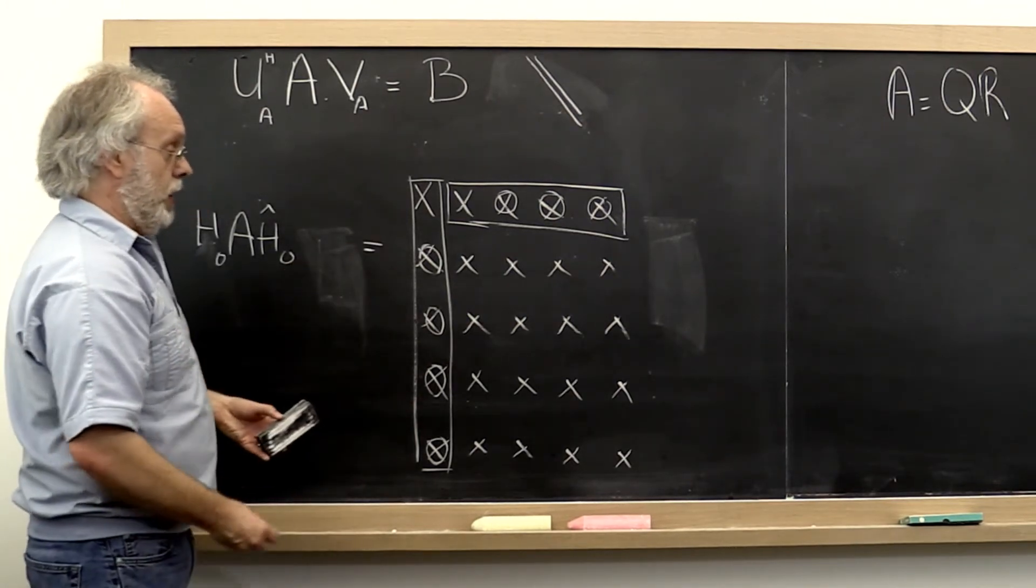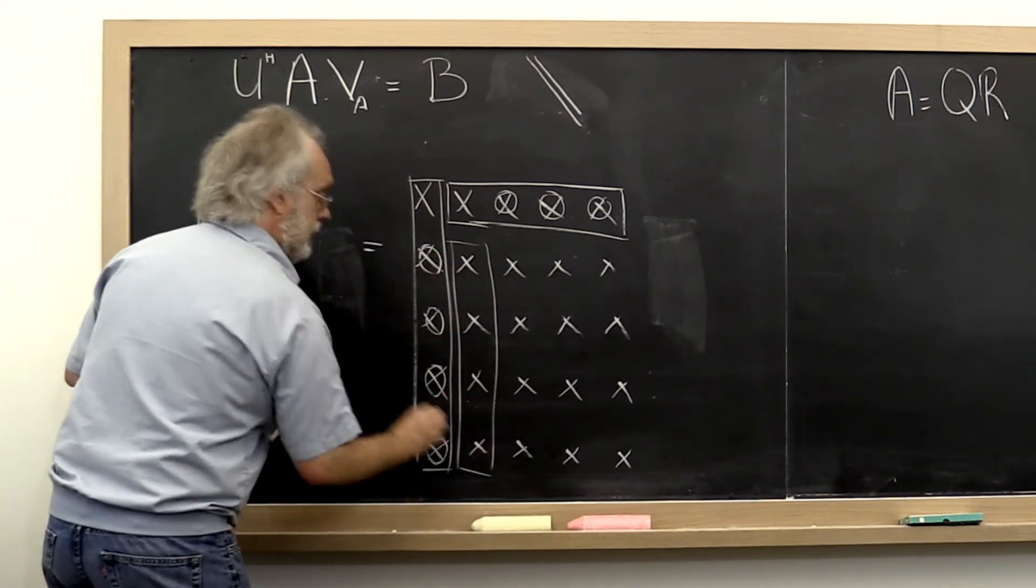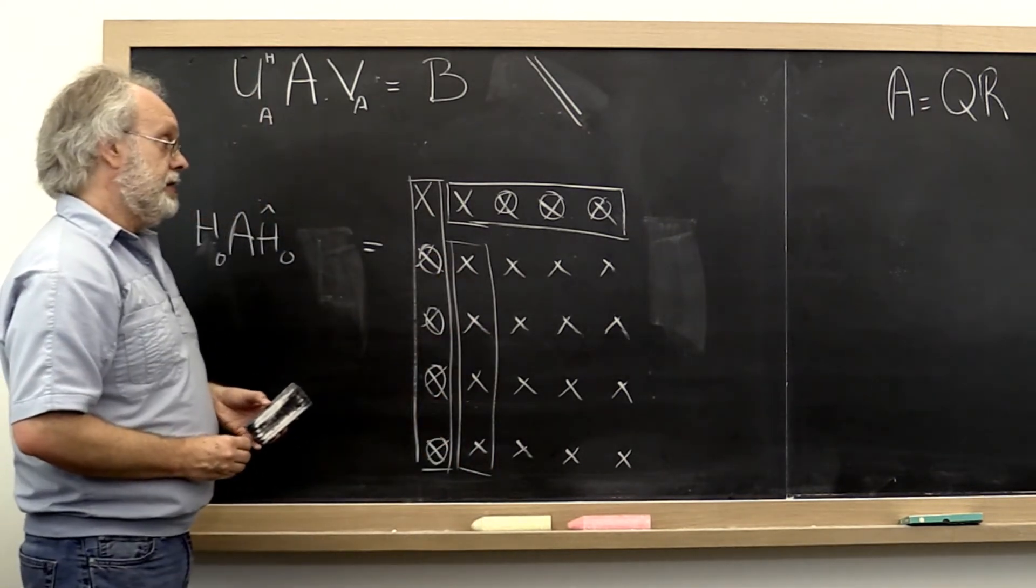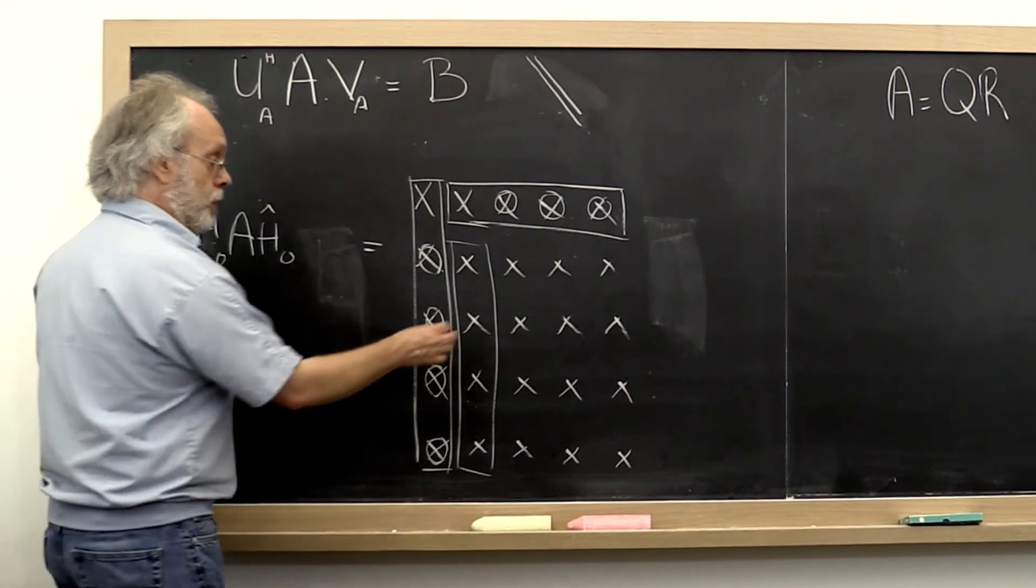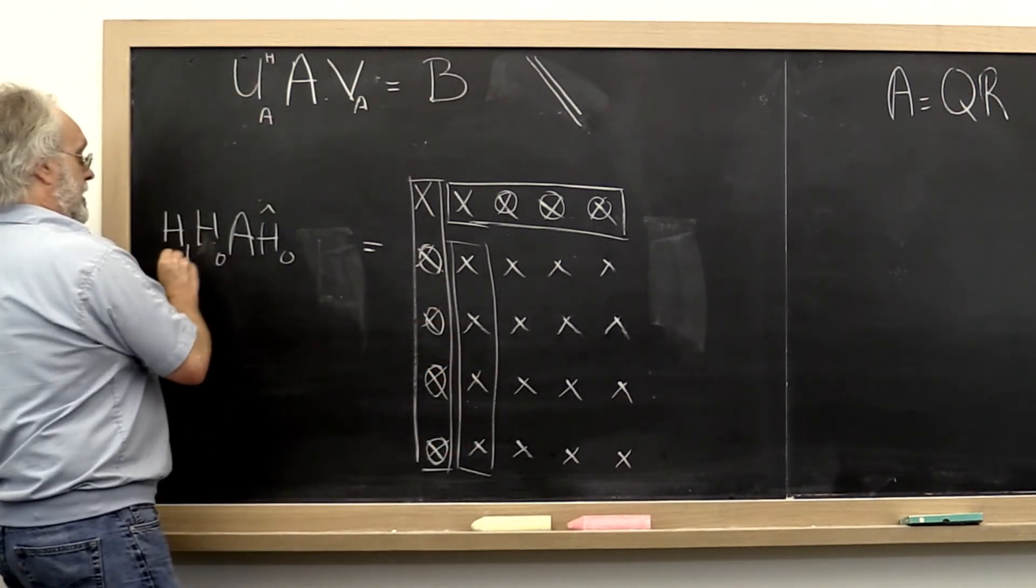Now you can see where this is going. We can next look at this and say what Householder transform introduces zeros right there. We'll call that H1.